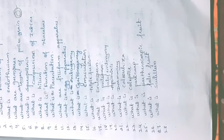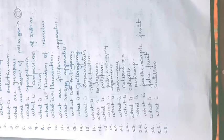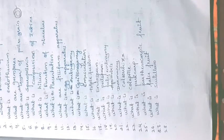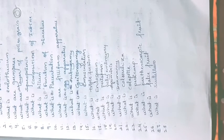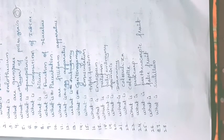What is coleorrhiza? Coleorrhiza is an undifferentiated mass of cells which covers the radicle or root tip. What is coleoptile? Coleoptile is also an undifferentiated mass of cells — it is a transparent sheath which covers the shoot tip, and that is called coleoptile.